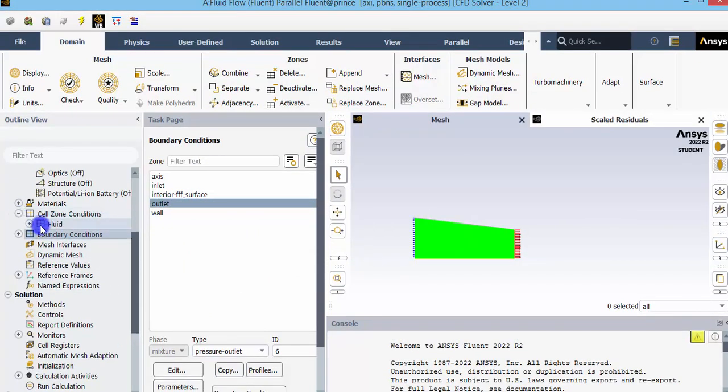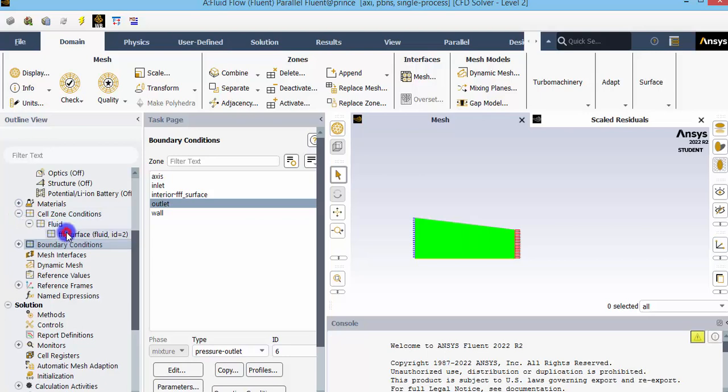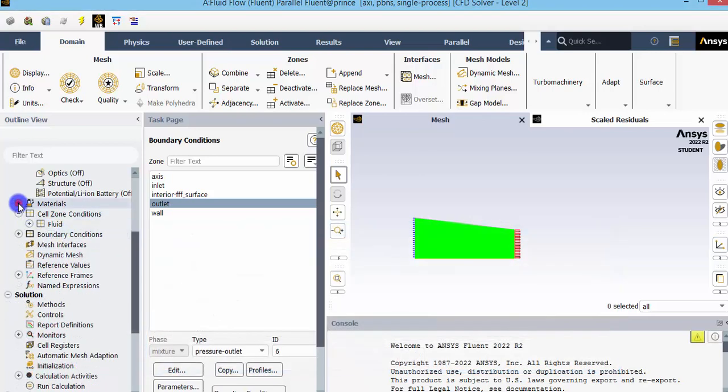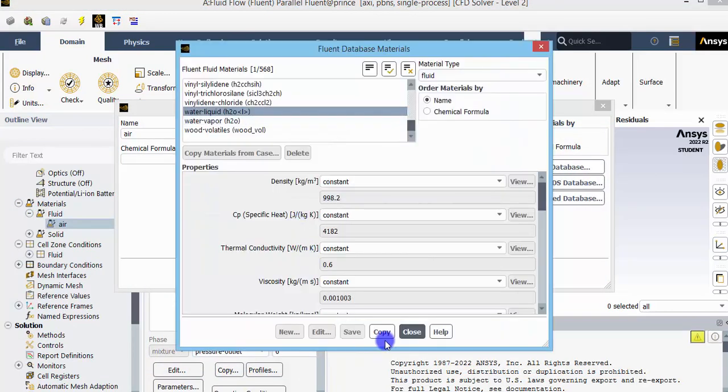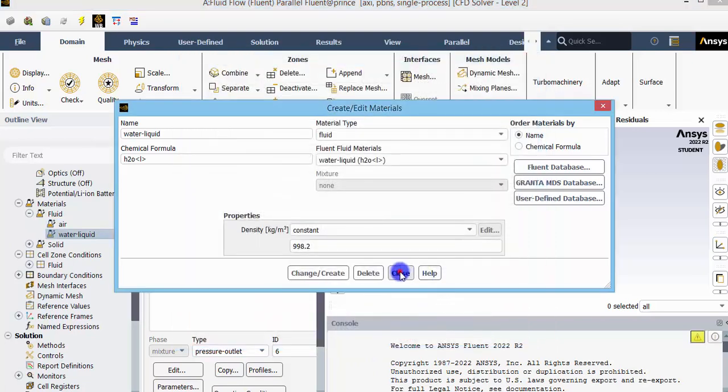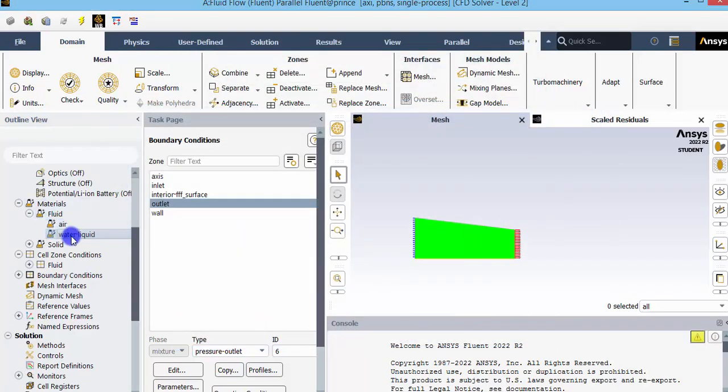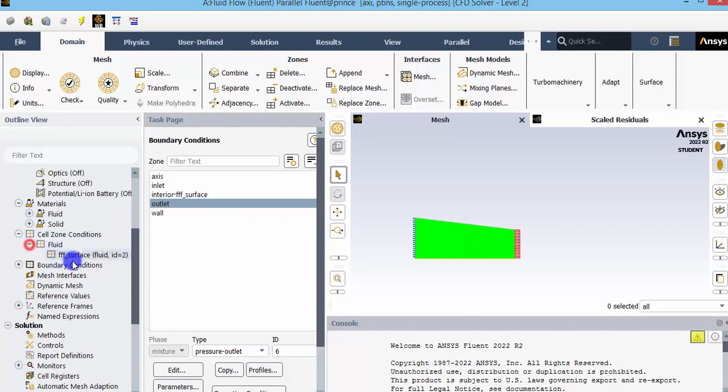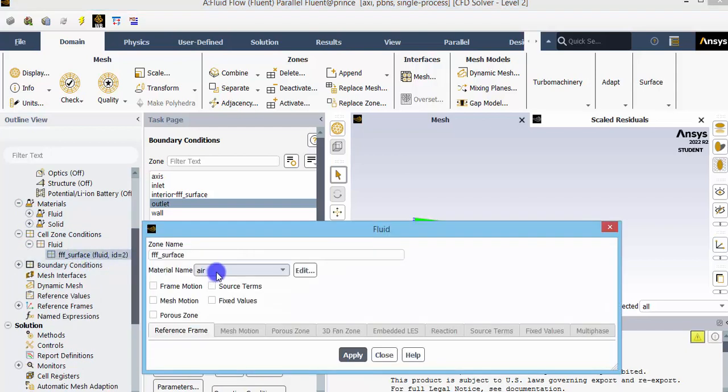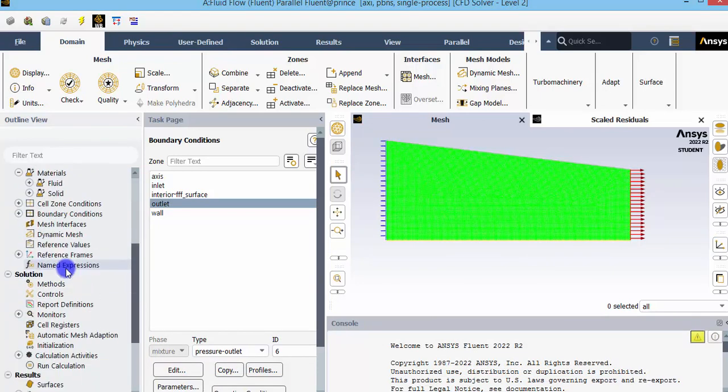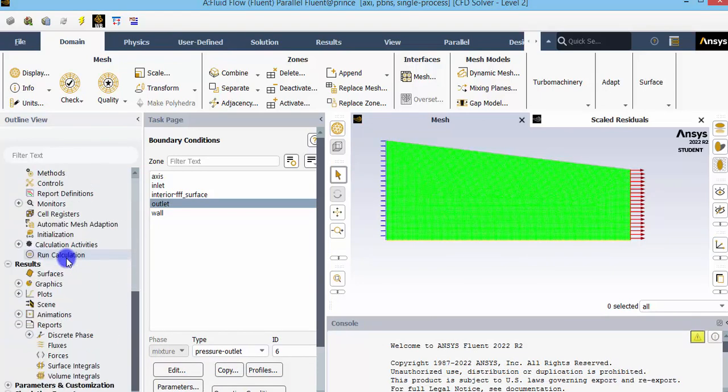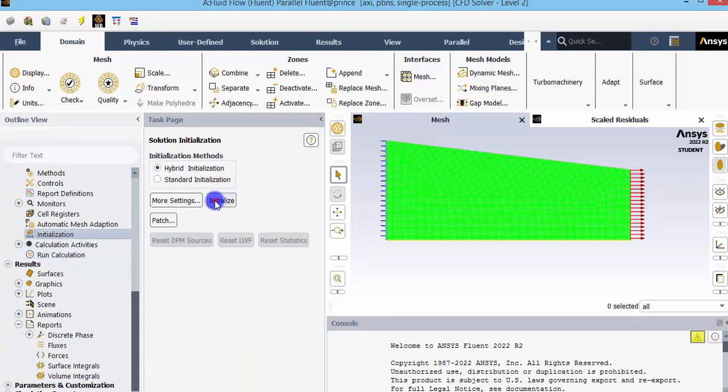After providing this boundary conditions, we need to set the cell zone conditions. Since we are having water inside the zone, go to the materials and first go to fluid database. Add the water liquid to our system. Now we can see water liquid in our system. We have to assign this fluid zone as water. Double click that and change that to water liquid and click apply. So now all the zone is set to be water.